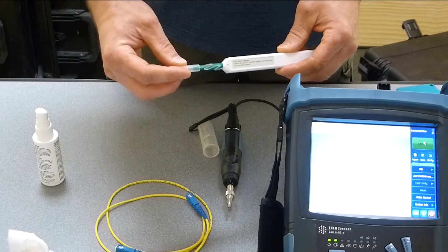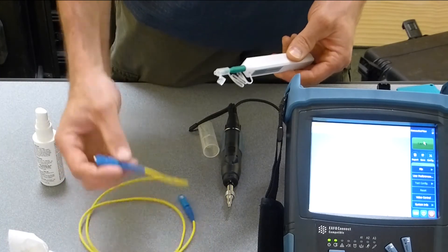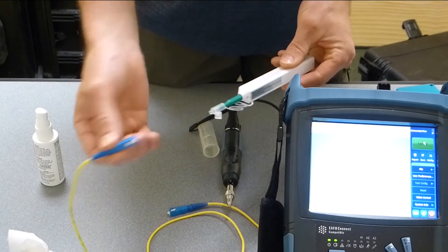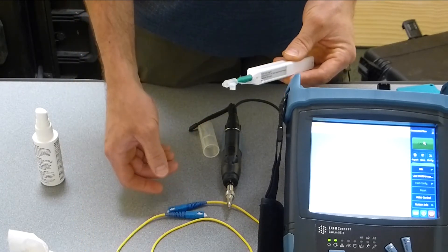Now the one click cleaners are nice because we can use them with patch cords. We can simply put that in there, click down, and that will swipe the end face of the connector.